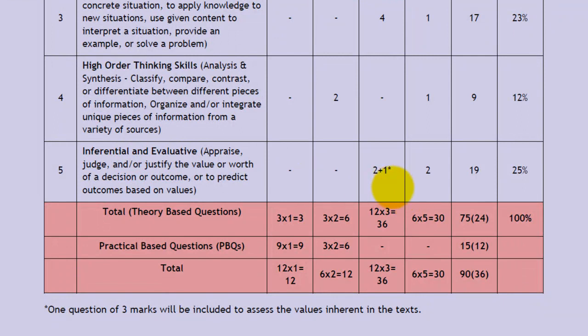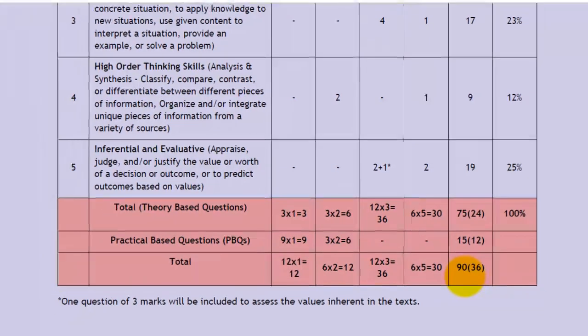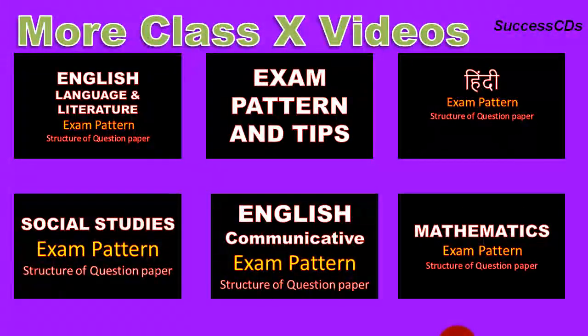Questions based on inference and evaluation: there will be 2 plus 1 value based question of 3 marks each and 2 questions of 5 marks each, totaling to 19 marks. Questions based on practicals will have a weightage of 15 marks. And the theory paper will have a weightage of 75 marks, totaling to a 90 marks paper. Thank you for watching. We have similar information on other subjects — do subscribe to Success CDs Education.